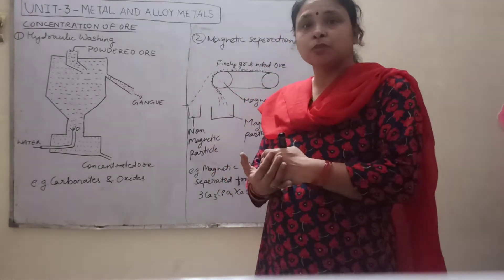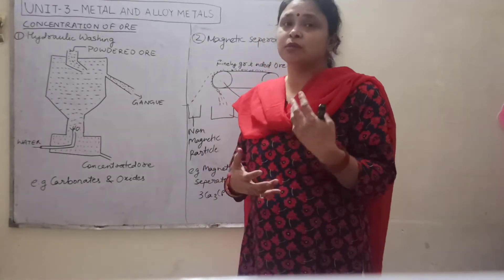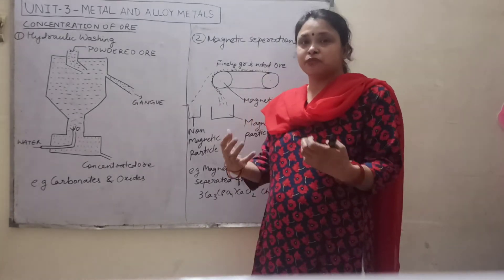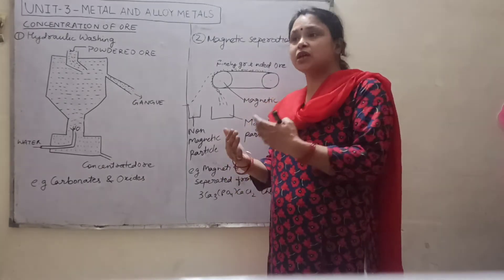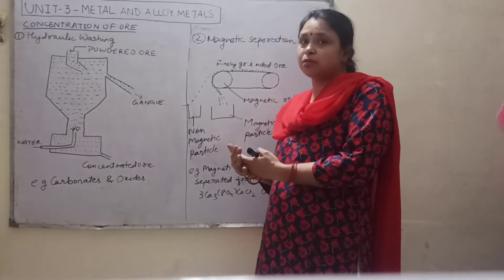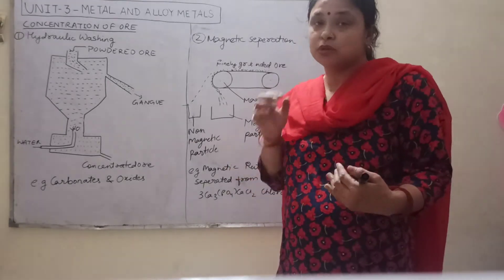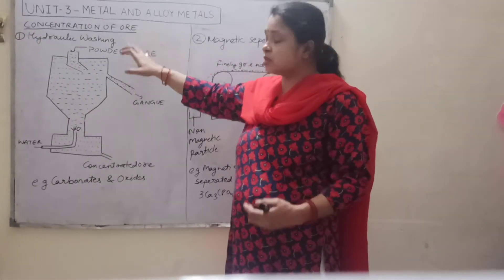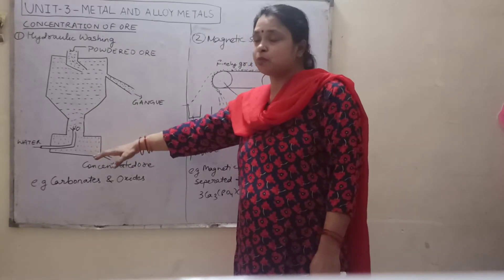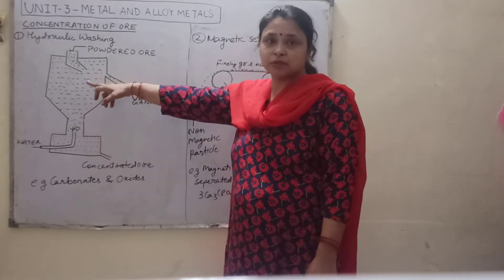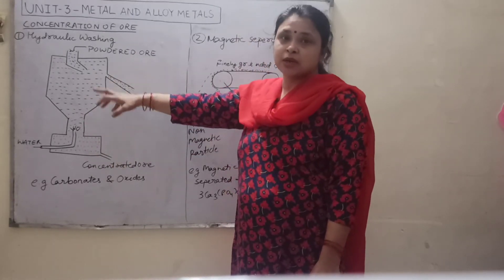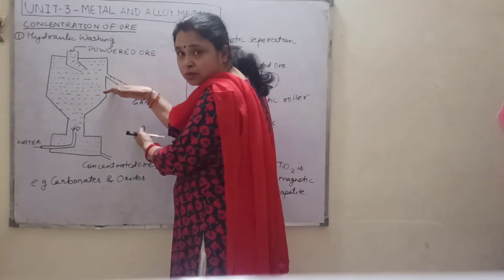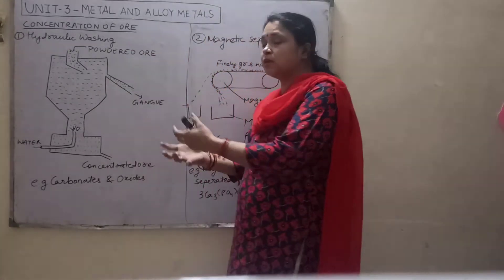The main principle of hydraulic washing is that there is a weight difference between the ore and its impurities — the impurities are lighter and the ore is heavy. So we use hydraulic washing where an upward stream of water is applied with pressure, which causes bubbling in the suspension or solution we made of the ore.